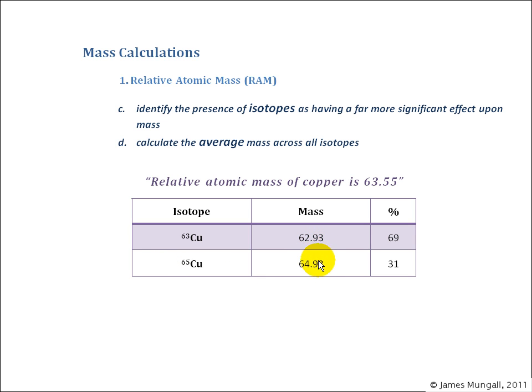You can see that the 63 copper weighs slightly less than 63, 62.93 because of that slight binding energy, and then similarly for the 65 isotope that's slightly below, 64.93.